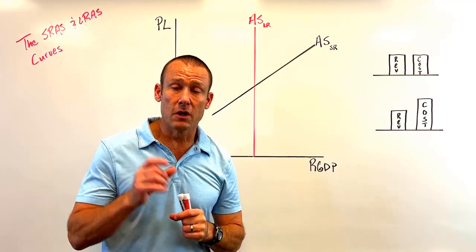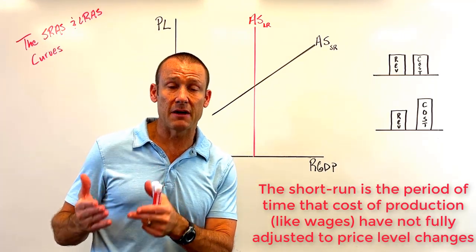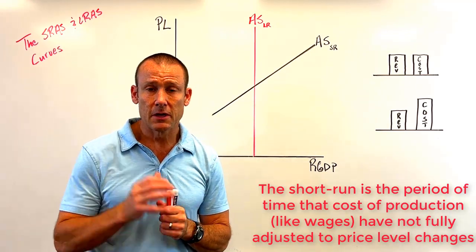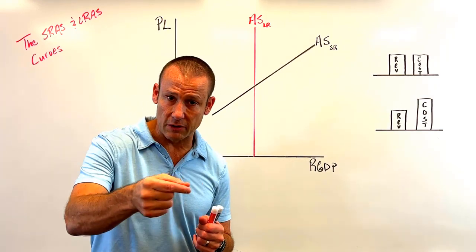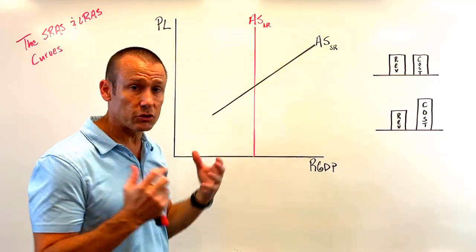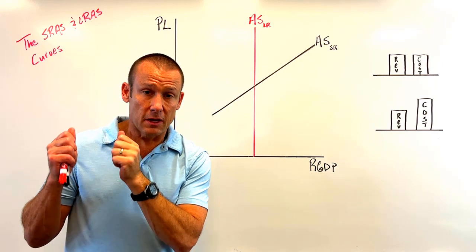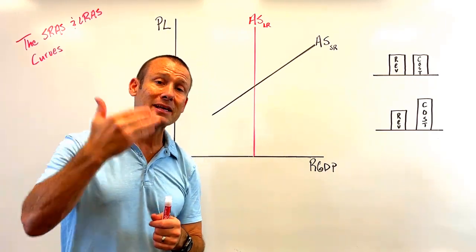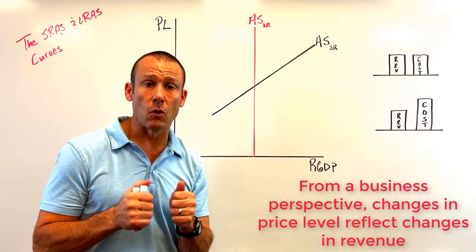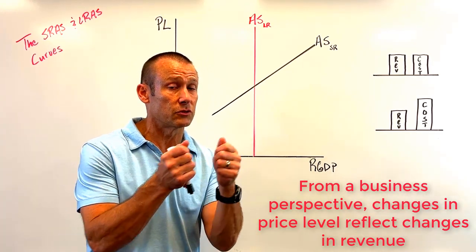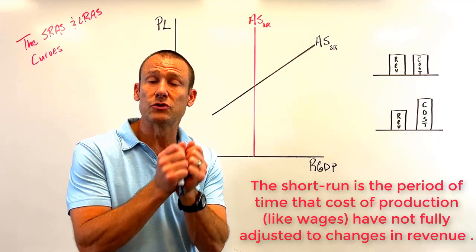The short run is that period of time when we get price level changes because of shocks, and the cost of production have not fully adjusted to those price level changes. I'm also going to rename price level changes as revenue changes, because the aggregate supplier — the producer of goods and services — is businesses, and price level changes reflect changes in revenues to those businesses. So the short run is that period of time when cost of production have not fully adjusted to changes in revenue.